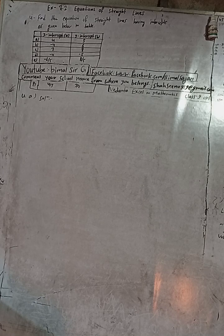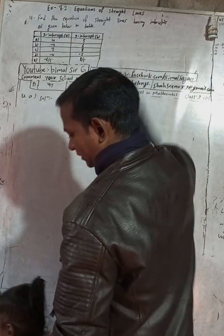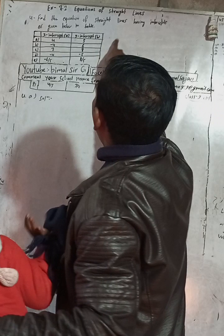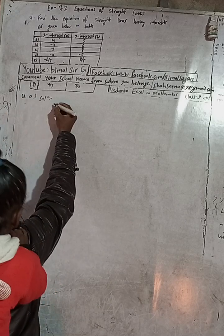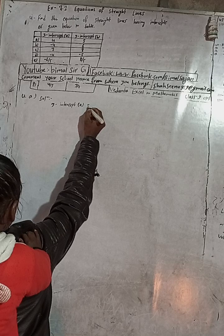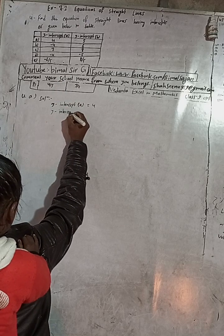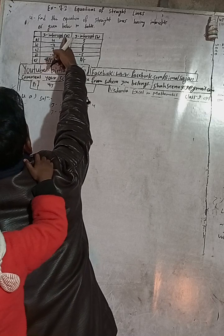Hi Class 9 and 10 students, welcome back to Bimal Sarji's YouTube channel. This is question number 4, exercise 7.2, equations of a straight line — Vedant Excel in Mathematics, optional mathematics, class 9. Find the equation of a straight line having intercepts. Here is a table with the given values: x-intercept A is equal to 4, and y-intercept B.